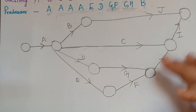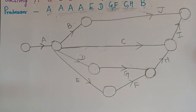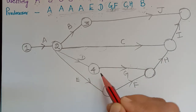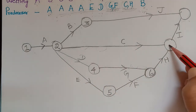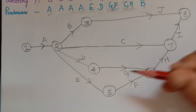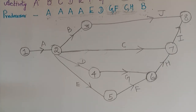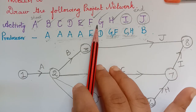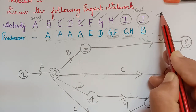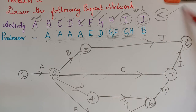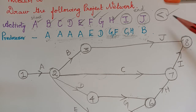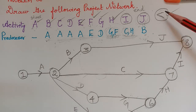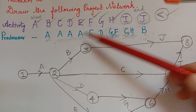After the rough diagram, we redraw it neatly with a scale. We then number the nodes: node 1, node 2, node 3, node 4, node 5, node 6, node 7, and node 8 — totaling 8 events. In the next video, we will learn how to draw the network when activities are given using the less-than symbol to indicate successors and predecessors. Thank you.